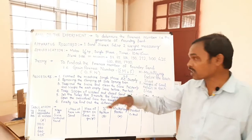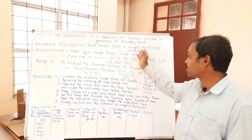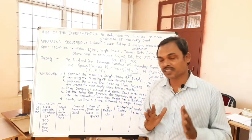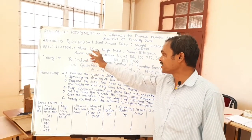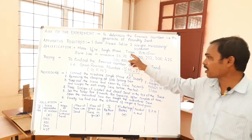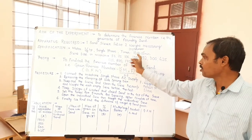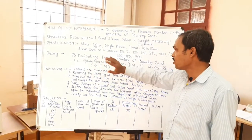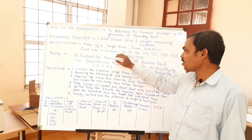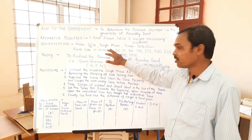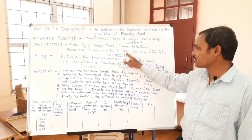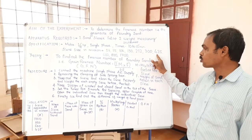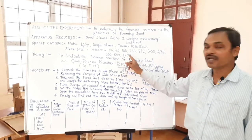The basic required apparatus are a sand sieve setup and a weight measuring instrument. The specifications of the sand sieve: one motor, 1/8 HP, single phase. The timer runs 10 to 15 minutes maximum. The sieve sizes, all in microns, are: 53, 75, 106, 150, 212, 300, 425, 600, 850, and 7300.